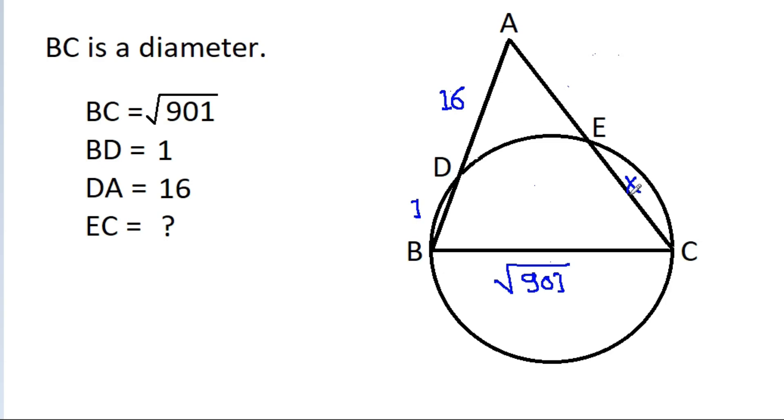Suppose EC is equal to X, and now if we join DC, then since BC is a diameter, this angle will be 90 degrees.